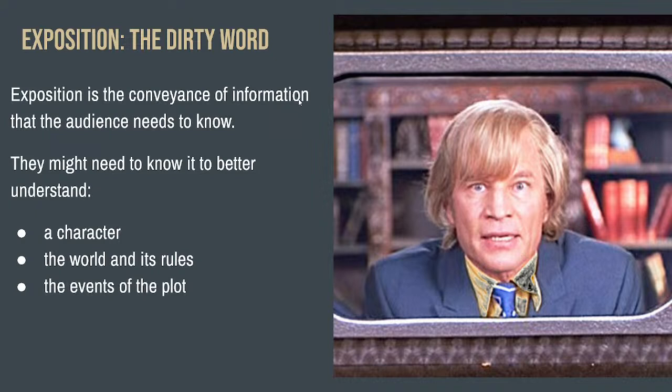There's Austin Powers' character Basil Exposition — he has a funny way of lampshading the exposition dump. He shows up and says 'I'm the exposition guy, here's all the info you need to know, Austin Powers.' He sort of takes that role and makes it funny, disguising the information by dressing it up, putting a clown suit on it. It's done in a goofy way that fits the tone of the story and distracts us from the medicine of the information.